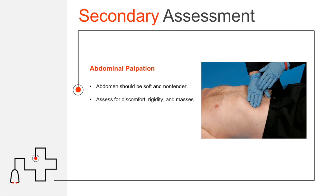Abdominal palpation is often done pre-hospitally. You don't have to push down super hard — especially in somebody with abdominal pain. First, identify which quadrant the pain is in, then go to the furthest quadrant away from that and start your palpation there. If you elicit more pain by pressing where it already hurts, it'll be very difficult to assess the rest of the abdomen. On light palpation, the abdomen should be smooth. Note any masses, which may indicate an enlarged liver, bowel distension, an aortic aneurysm, or a cancerous tumor.